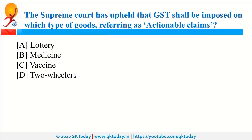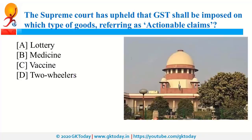The Supreme Court has upheld that GST, that is Goods and Service Tax, shall be imposed on goods referred to as actionable claims. So, it is about lottery. Recently, the Supreme Court upheld that GST shall be imposed on the sale of lotteries, betting, and gambling.